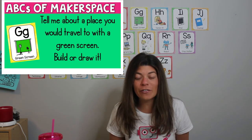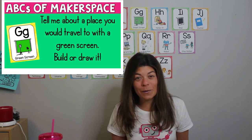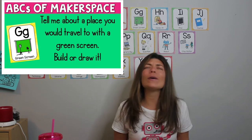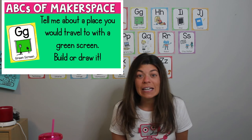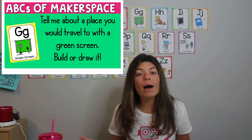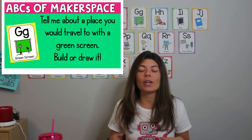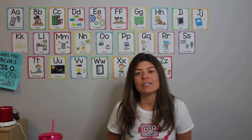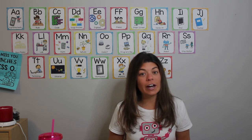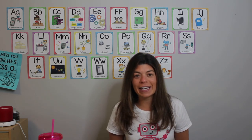You can either draw a place you want to visit with you inside on a piece of paper, or you can build it. So, if you really wish you could be in Paris, maybe you can build with Lego, wooden blocks, or magnet builders — anything you have at home, even recycled materials. You can build the Eiffel Tower! Think about a place you want to travel and let me know. You can share it on Flipgrid and I can't wait to see what you do and hear more about it.